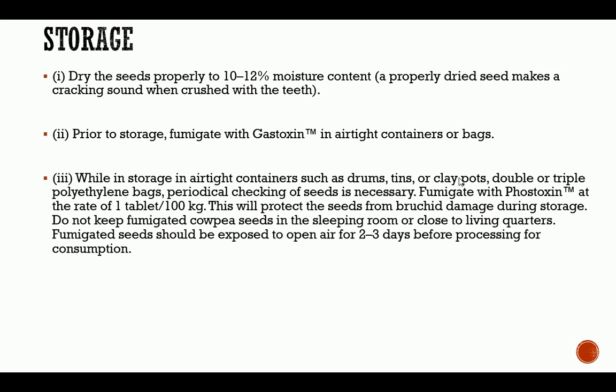For storage, the seeds are dried properly to 10 to 12% moisture content — a properly dried seed makes a cracking sound when crushed with the teeth. Prior to storage, fumigate with gastoxin in airtight containers or bags. While in storage in airtight containers such as drums, tins, or clay pots, or double/triple polythene bags, periodical checking of seeds is necessary. Fumigate with phostoxin at the rate of 1 tablet per 100 kg to protect seeds from bruchid damage during storage.